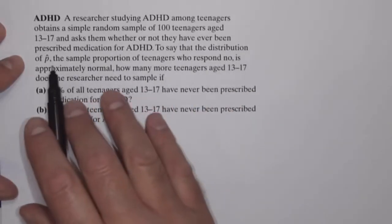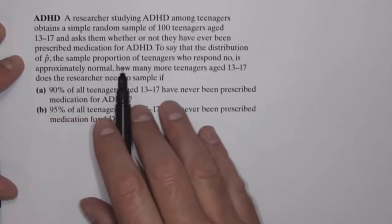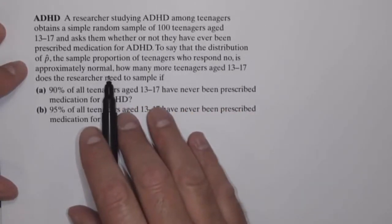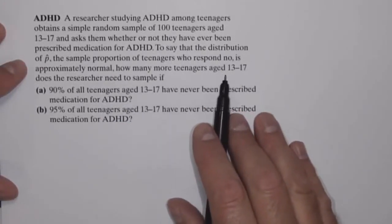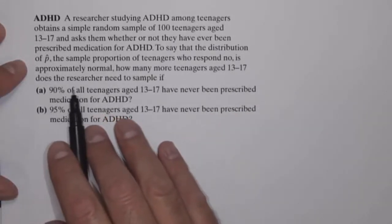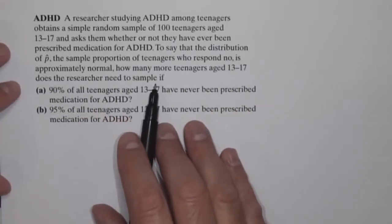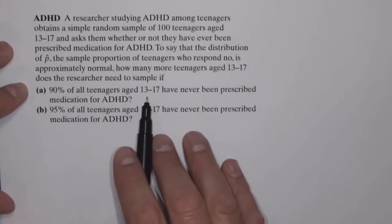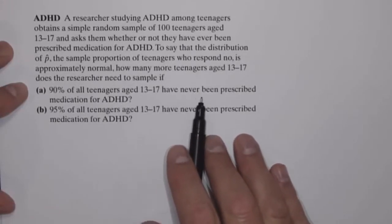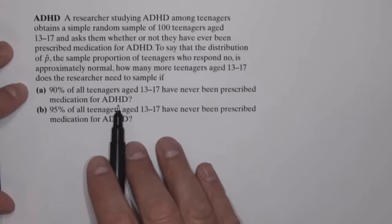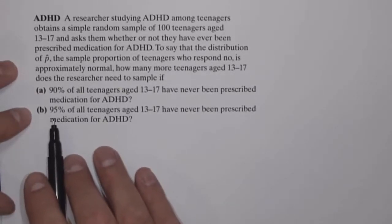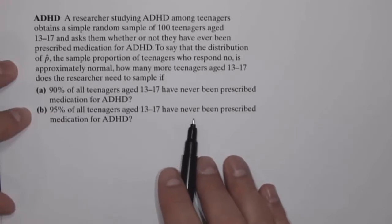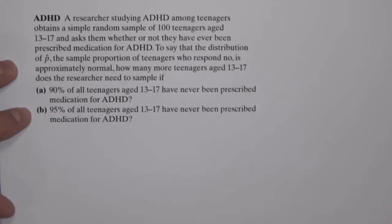To say that the sampling distribution of p-hat, the sample proportion of teenagers who respond no, is approximately normal, how many more teenagers aged 13-17 does the researcher need to sample if (a) 90% of all teenagers aged 13-17 have never been prescribed medication for ADHD, or (b) 95% of all teenagers aged 13-17 have never been prescribed medication for ADHD?